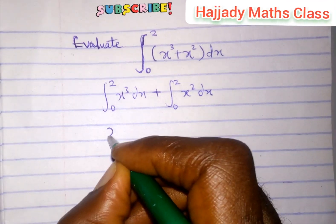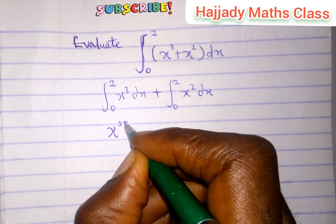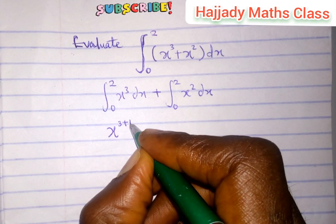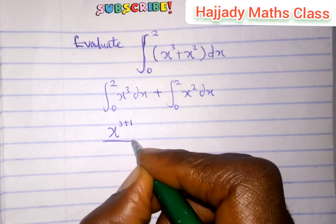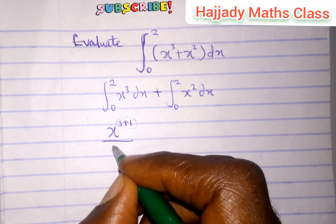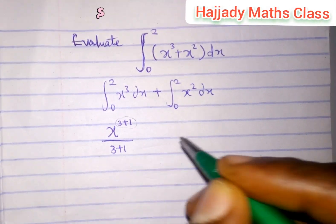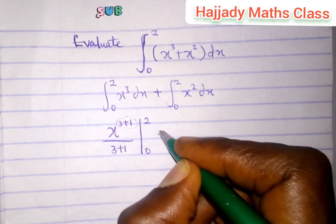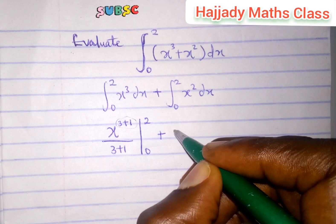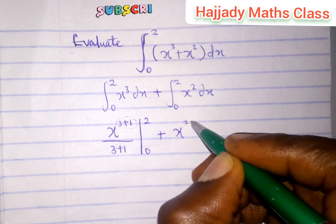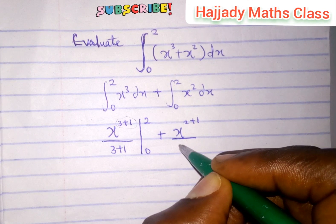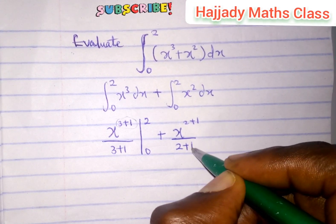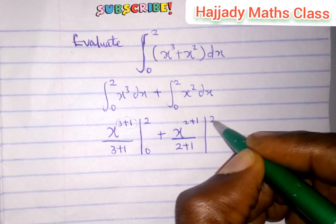Now, integrating x cubed is the same as x raised to the power 3 plus 1. So, 1 will be added to the power, and the same thing here will be repeated as the denominator. So, setting the limit of 2, 0, plus this, which is x raised to the power 2 plus 1, repeating the same as the denominator. Although there is a formula for that, setting the limit of 2, 0.